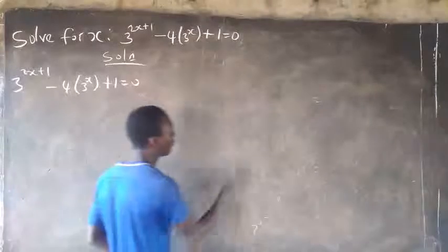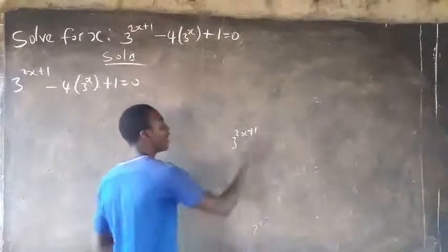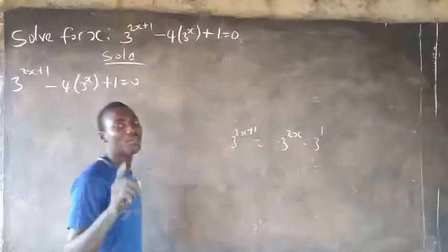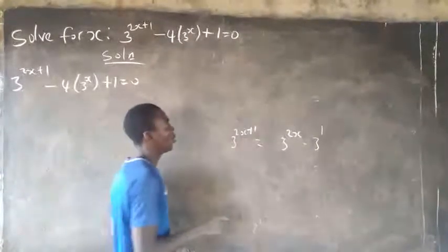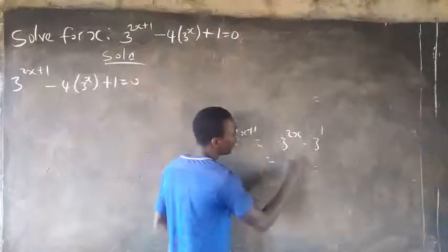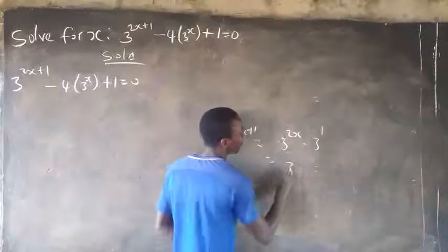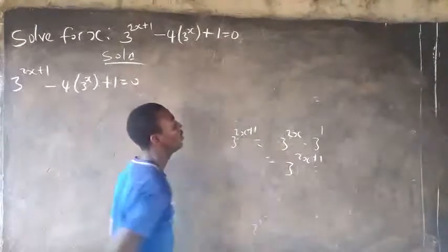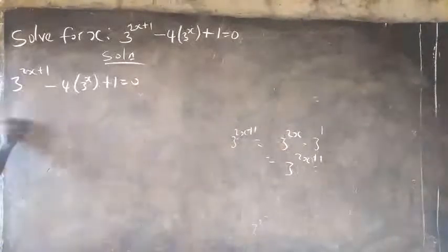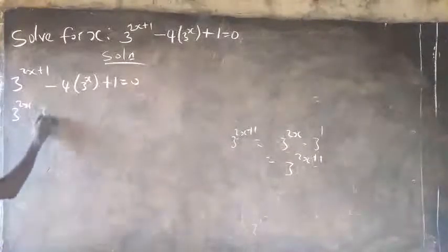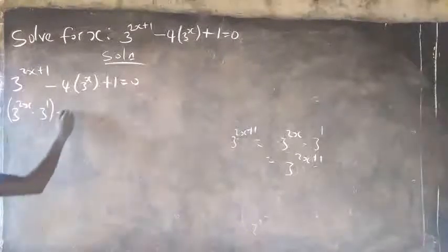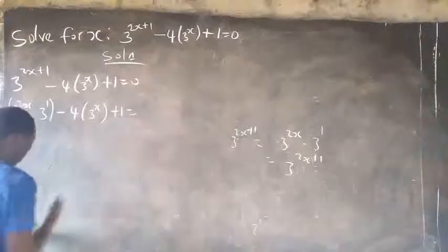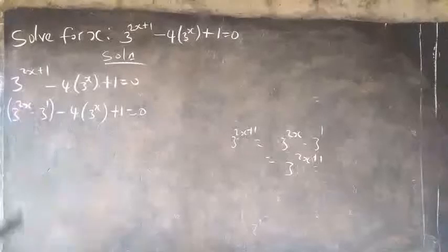For us to have 3 raised to the power of 2s plus 1, it means that we are having 3 raised to the power of 2s multiplied by 3 raised to the power of 1, because of the laws of indices. And minus 4 into 3 raised to the power of s plus 1 equals 0.